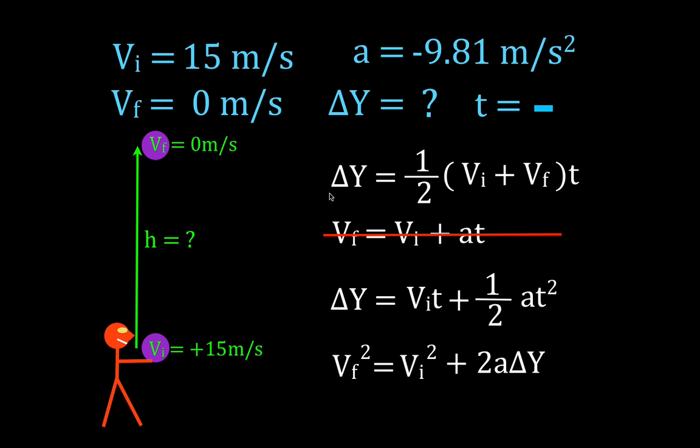That means this one has the change in position, or the height in it, but it has the initial velocity, which we know. The final velocity, it has the time. We don't know the time. So we don't know all three of the other variables. So we can't use this equation. The same thing goes for this equation, because this equation has time. We don't know time.